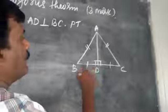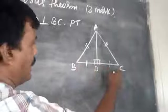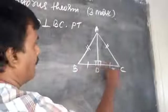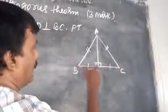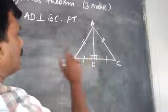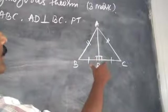BD is equal to half of BC, and CD is equal to half of BC. So this is the principle we will use.